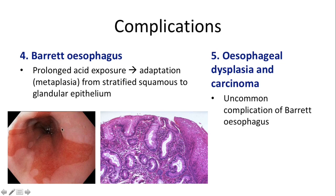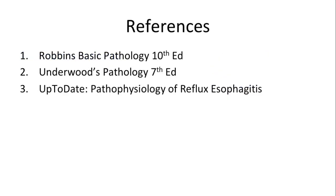Barrett's esophagus in the lower esophagus is often seen as salmon pink patches extending upwards from the lower esophagus. Under the microscope, the normal stratified squamous epithelium of the esophageal lining has been partially replaced by glandular epithelium with presence of goblet cells. References for reflux esophagitis include Robbins Basic Pathology, Underwood's Pathology, and UpToDate pathophysiology of reflux esophagitis for clinical manifestations.